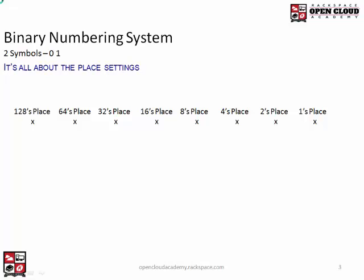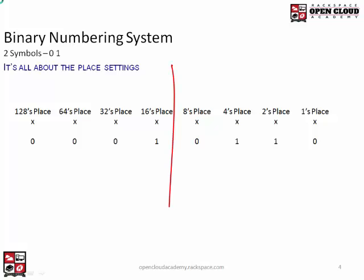Let's do some practice. Breaking the byte in half: this side gives us 6, and the other side gives us 16. We know this is going to be an even number because the ones place isn't set. So 16 plus 6 is 22. That's the number.